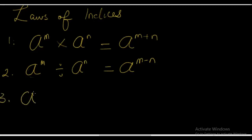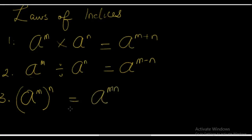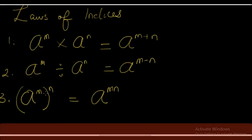Rule number 3: A raised to the power M, in brackets, raised to the power N, is equal to A raised to the power M times N. This is very simple. All you have to do is multiply the index by the power to which the index and the base are raised to. Now let's move to rule number 4.